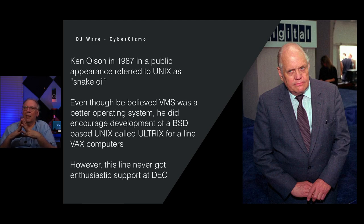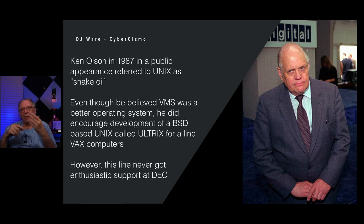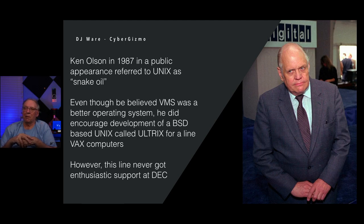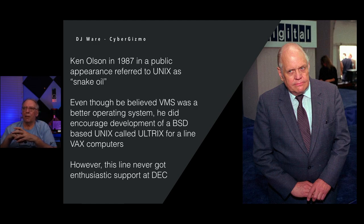Ken Olson in 1987, in a public appearance, referred to Unix as snake oil. The Unix community was outraged. He believed that VMS was a superior operating system. But in all honesty, he did encourage development of a BSD Unix called Ultrix. However, it never got any traction inside DEC — when you have an engineering firm, they develop 'not invented here' syndrome. If they didn't make it, they'd assume it was a piece of junk. So Ultrix never took off, though it was available on those systems alongside Berkeley's Unix and AT&T Unix.